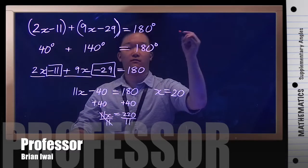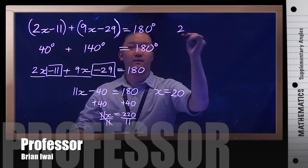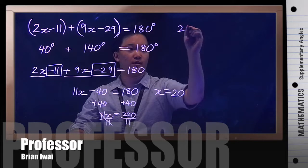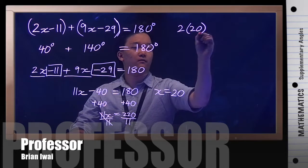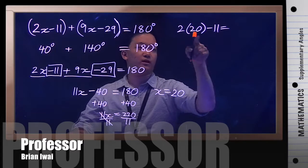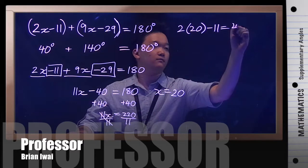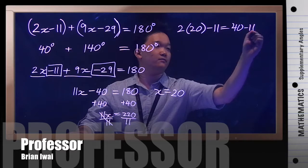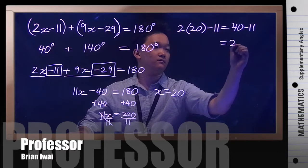So our first angle is, again, it's 2x but I'm not going to say x, I'm going to say 20 minus 11, and then solve for that. So 2 times 20 is 40 minus 11 and you get 29 degrees.